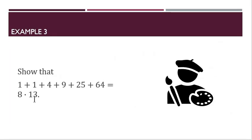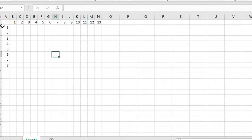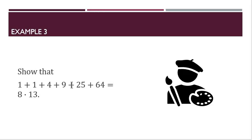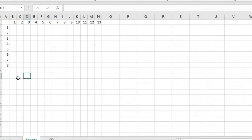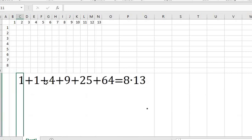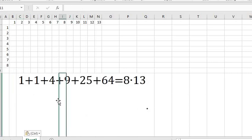Our last question is: show that 1 plus 1 plus 4 plus 9 plus 25 plus 64 is equal to 8 times 13. What we're going to do here is first draw 8 times 13. We'll use Excel and draw some grids. Then we're going to show that 1 plus 1 plus 4 plus 9 plus 25 plus 64 is equal to 8 times 13. Let's write that down — this is what we need to show.